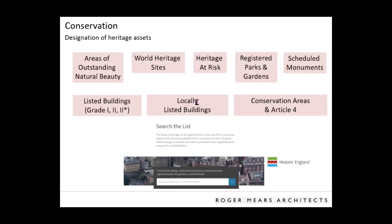What is designation? Designation means we are recognising and formally promoting that an asset has a special value. There are different levels — generally at two levels: national and local. At national level we deal a lot with heritage at risk, mostly churches, scheduled monuments, listed buildings, and locally listed buildings. Conservation areas are the only ones designated at council level.